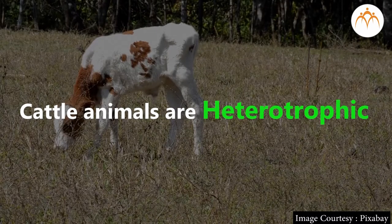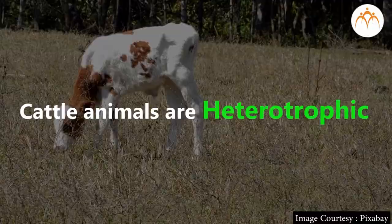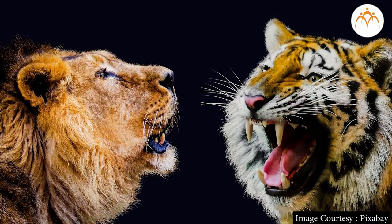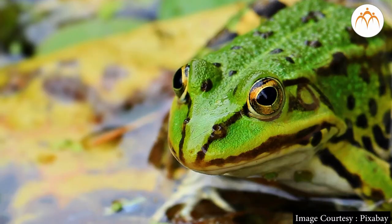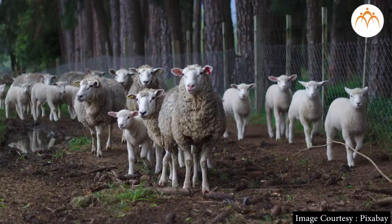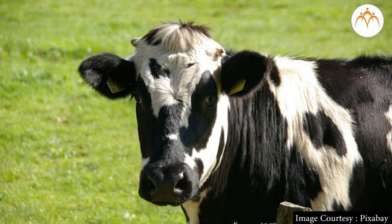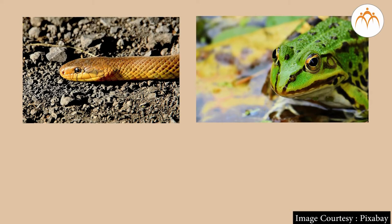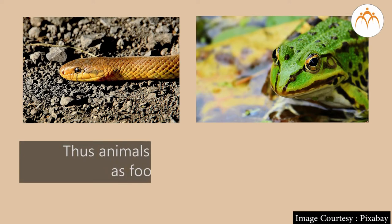Now let us consider animals like foxes, snakes, crocodiles, tigers and lions. We know that these animals hunt and eat other animals like rats, frogs, pigs, rabbits, deer, sheep, cows etc. as their food. Thus animals that directly use other animals as food are heterotrophic.